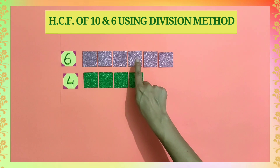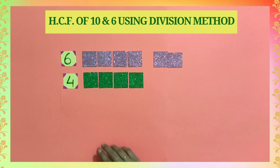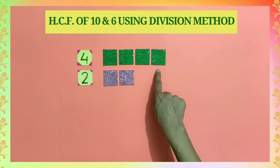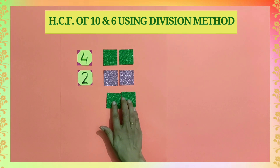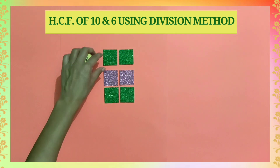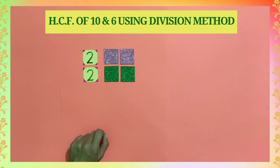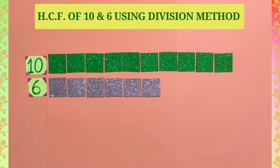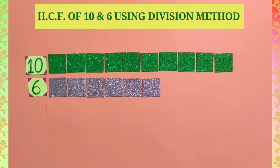4 and 4 they are equal in both the colors but we are left with 2 pink tiles. To further divide them, we will bring them down and remove the tiles that we have already divided. Now here we have pink and green tiles in equal numbers and no tile is left. So students, 2 is that number with which we can divide 10 and 6 in equal parts.